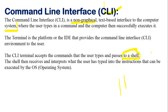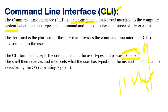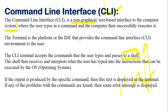The shell receives and interprets what the user has typed into instructions that can be executed by the operating system. Whatever I type in the terminal, the shell passes it to the kernel and the kernel executes it. If output is produced, it is displayed in the terminal; if there is a problem, an error message is displayed.